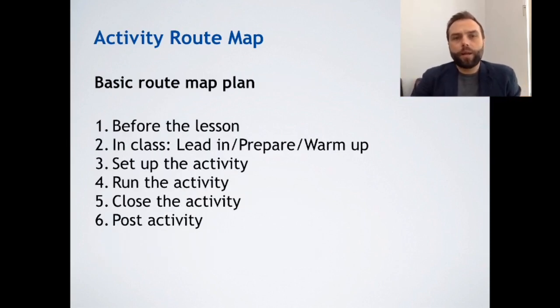The basic route plan for activity route map is: number one, before the lesson. Number two, in class, which is the lead in, prepare and warm up. Number three, set up the activity. Number four, run the activity. Number five, close the activity. And number six, post activity. So we're going to look at these six steps for activity route map.